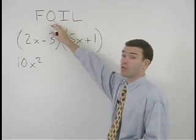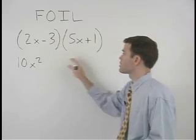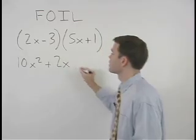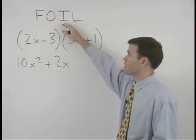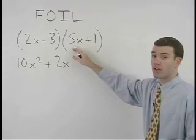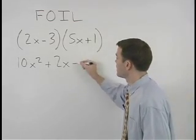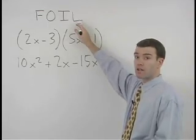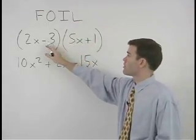product of the outer terms which is 2x times positive 1 or positive 2x plus the product of the inner terms which is negative 3 times 5x or negative 15x plus the product of the last terms negative 3 times